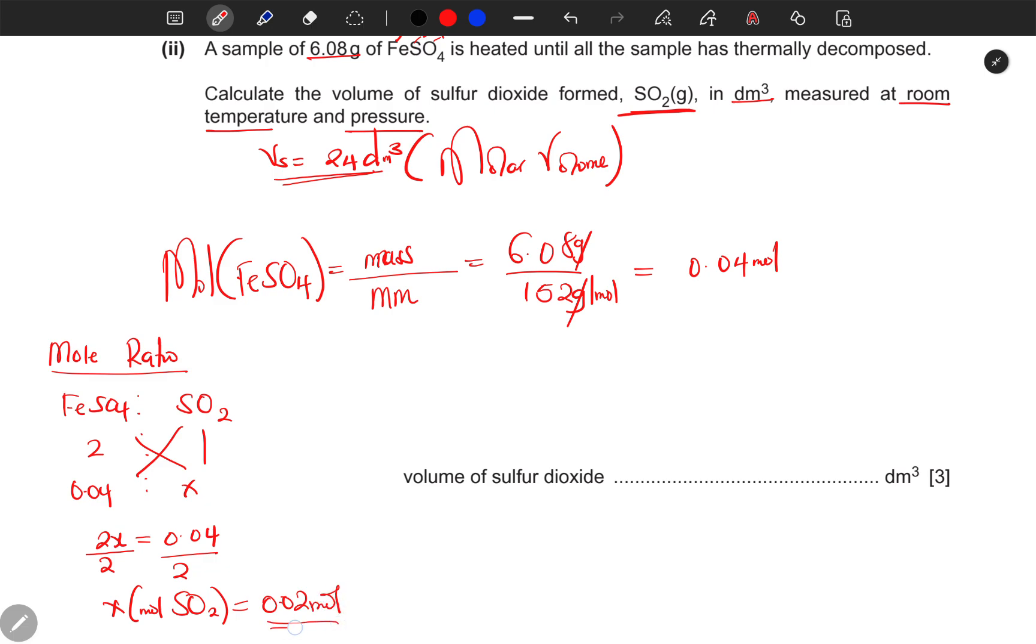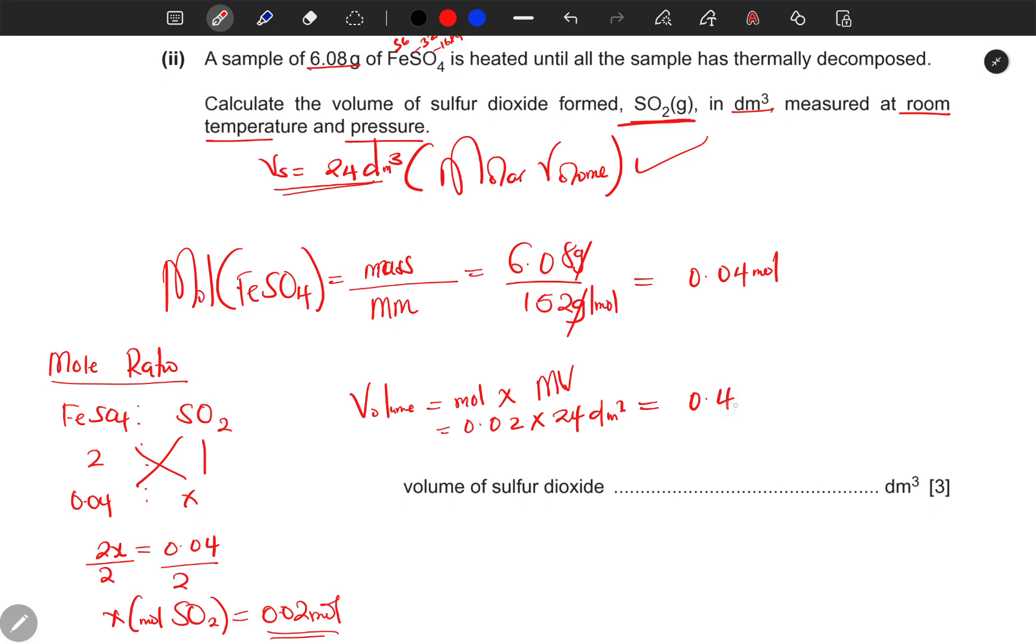Now that you know the number of moles of the compound you are looking for, volume equals number of moles multiplied by molar volume. The moles is 0.02, molar volume is 24 cubic decimeters. I'm getting 0.48 cubic decimeters.